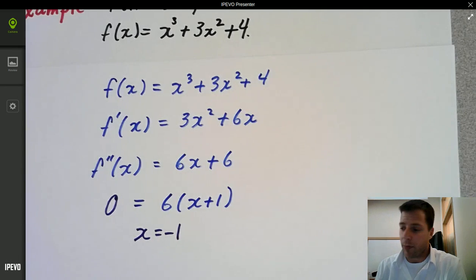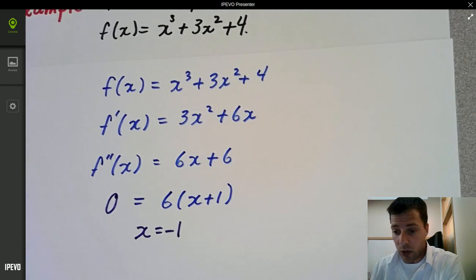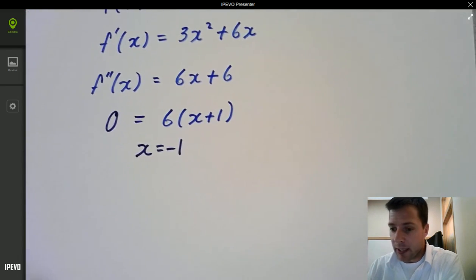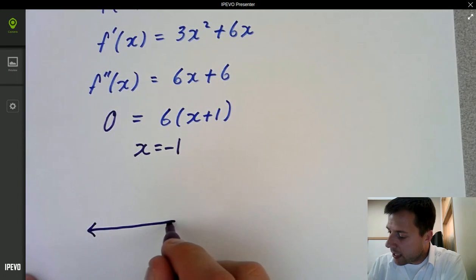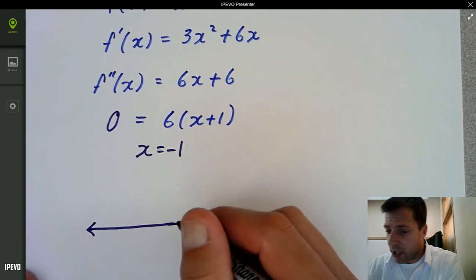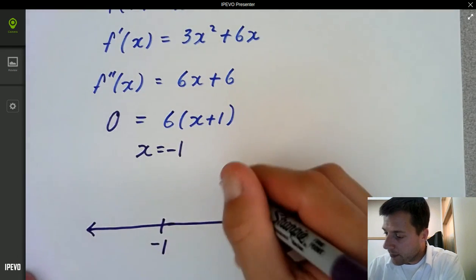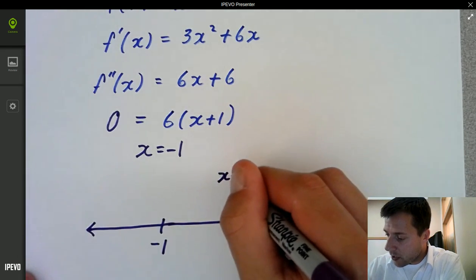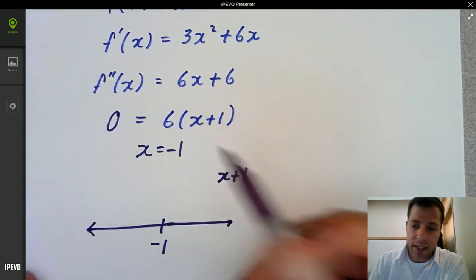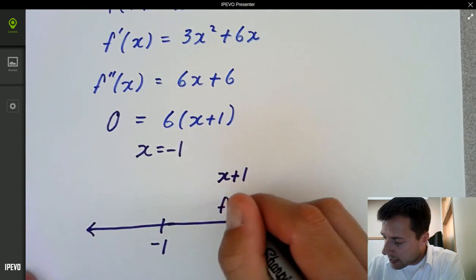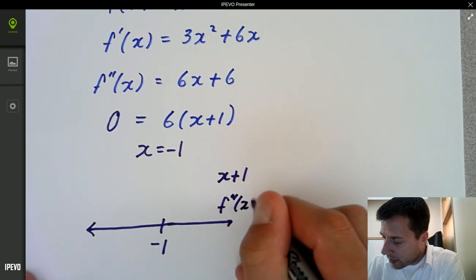That's our only possible point of inflection. So what do we do now? Well, we simply make a sign line. You might call this a sign analysis depending on the text. And people do this differently. I'm going to go ahead and put negative 1 here in the middle. Then I'm going to put my x plus 1. I don't have to put the 6 there. We are multiplying, but the 6 is always positive, so that doesn't matter. And we'll get the sign of our second derivative here.